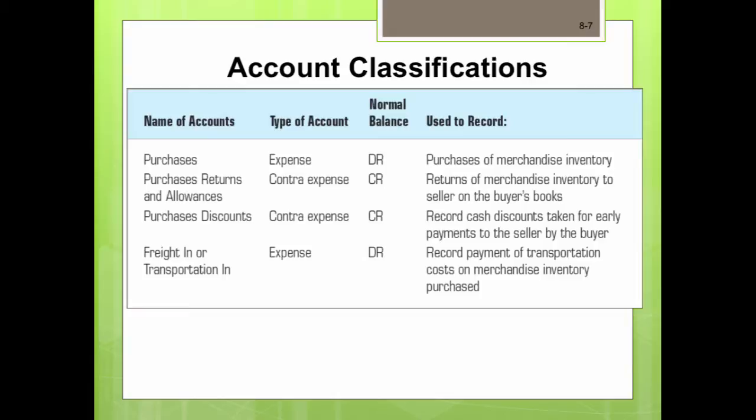In Chapter 7, we learned to account for the various sales and sales-related transactions typically engaged by the merchandising firm. In this chapter, we are going to learn to account for purchases and purchase-related transactions. The new accounts we will be using in this chapter are summarized in the table.